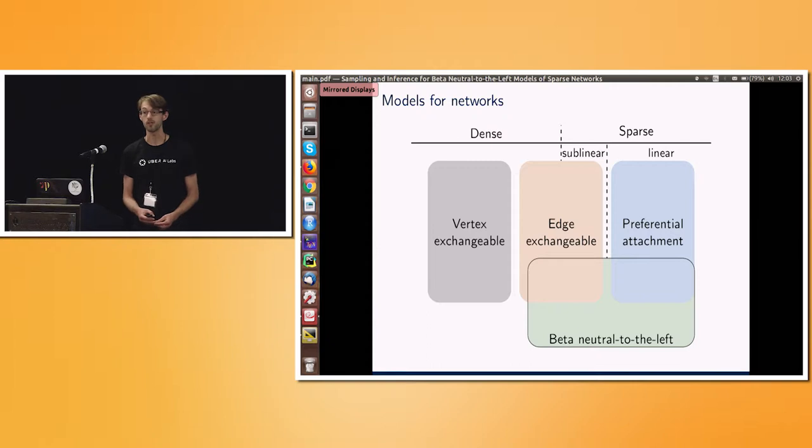On the other hand, we have preferential attachment models in blue. They can give us linear sparsity, but they're not really useful statistically. The inference is too difficult.